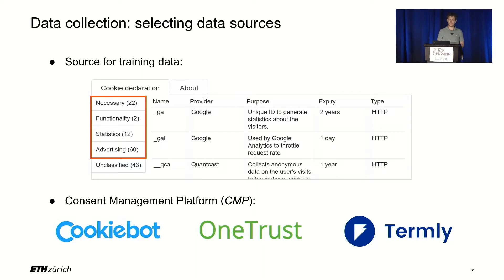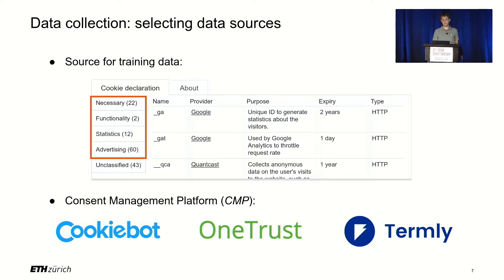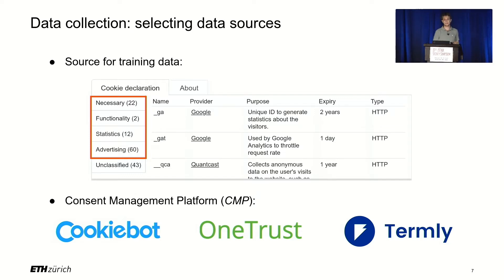We know from GDPR regulations that consent notices already contain purpose information due to the purpose limitation principle. We targeted pop-ups implemented by so-called Consent Management Platforms (CMPs) — third parties that host the code and content used by consent notices. We selected CookieBot, OneTrust, and Termly because they all provided the four specific categories we needed: strictly necessary, functionality, analytics, and advertising.